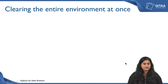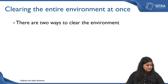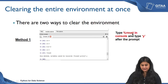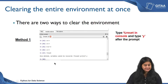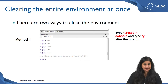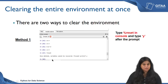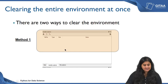Instead of dropping variables one by one, you might also be interested in clearing the entire environment at once. There are two ways to go about it. The first way is to use a percentage reset command in the console. Once you type percentage reset and hit Enter, it will prompt you with the line that reads: once deleted variables cannot be recovered, proceed yes or no. Y stands for yes and n stands for no — this is to ensure you have not typed percentage reset accidentally, as an extra layer of check.